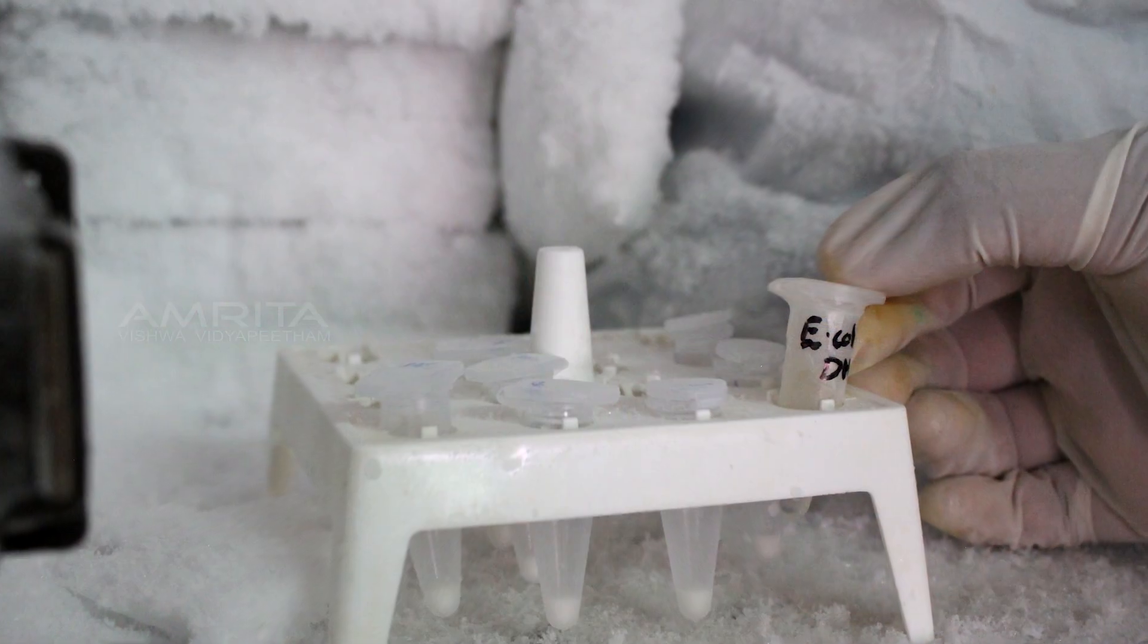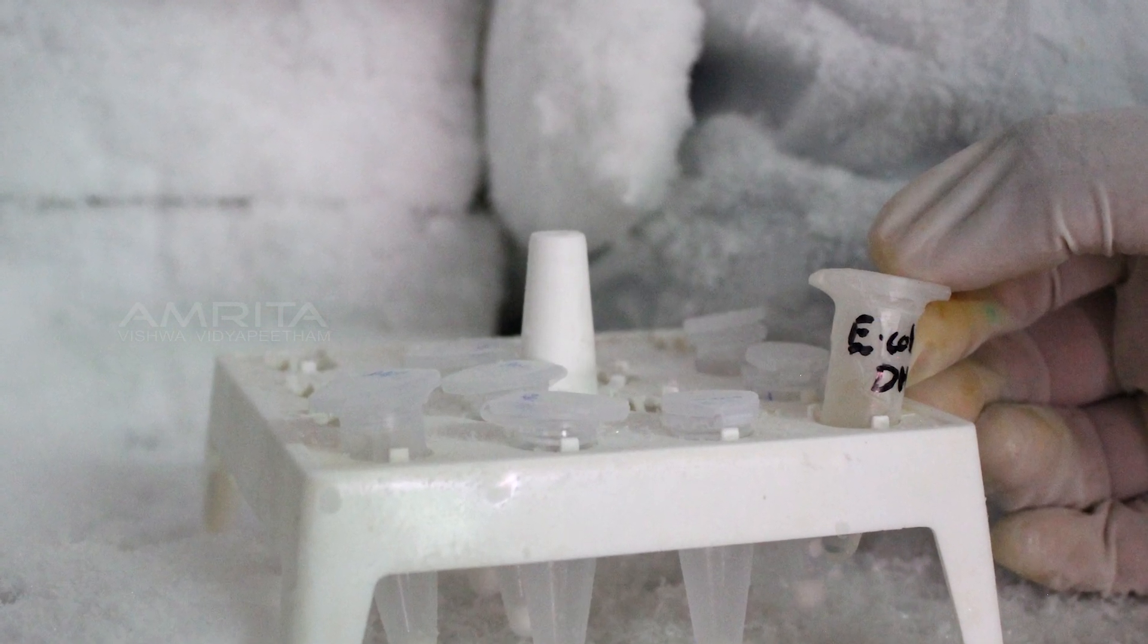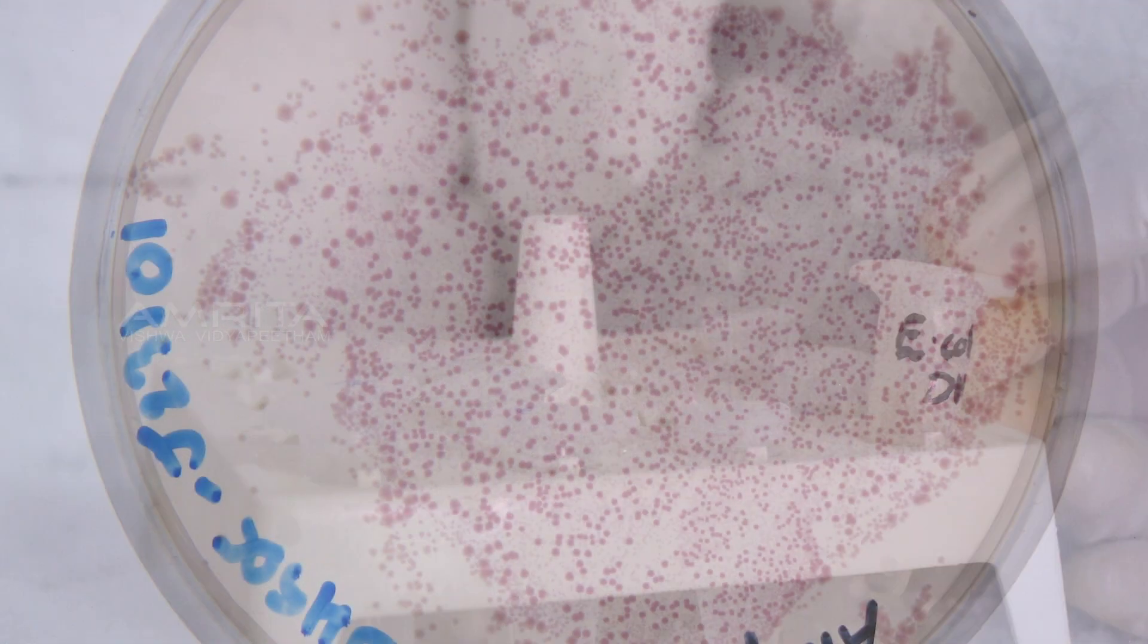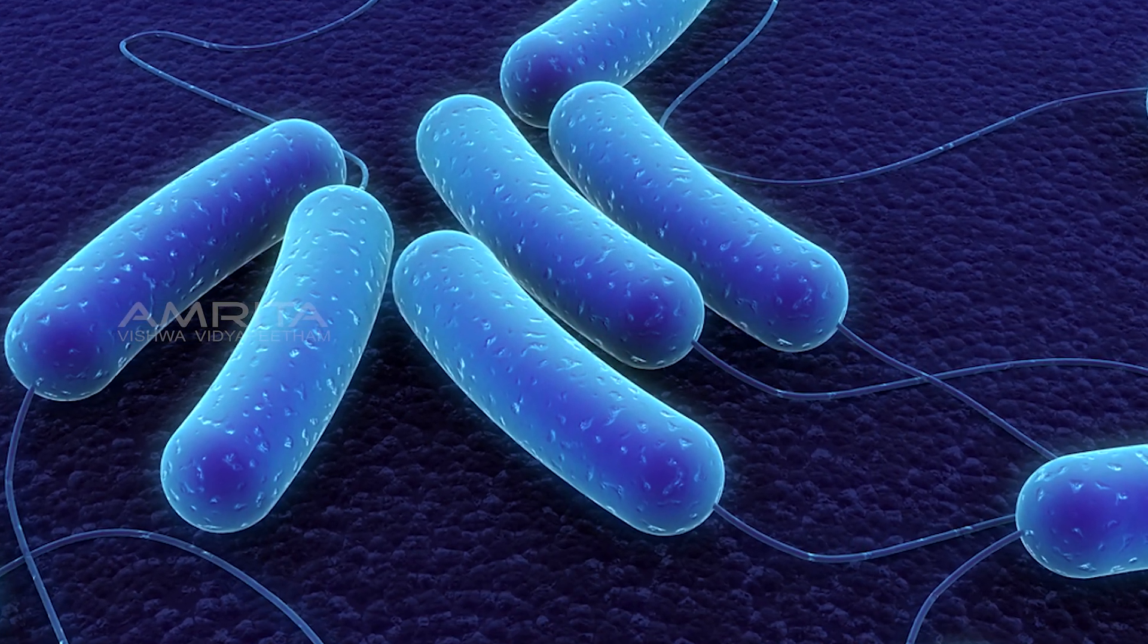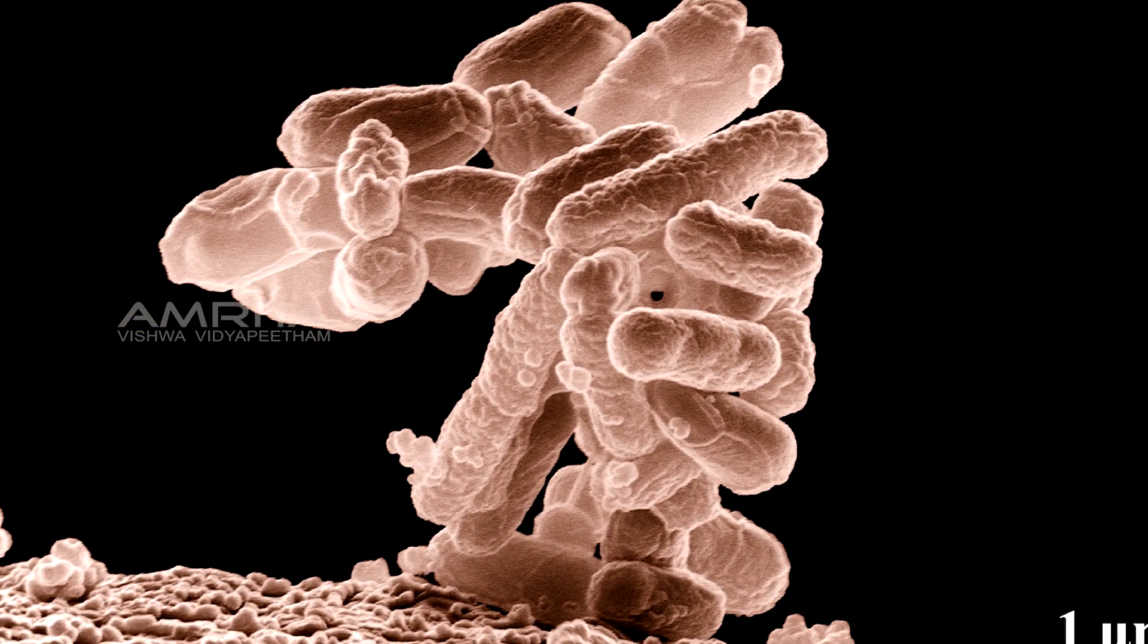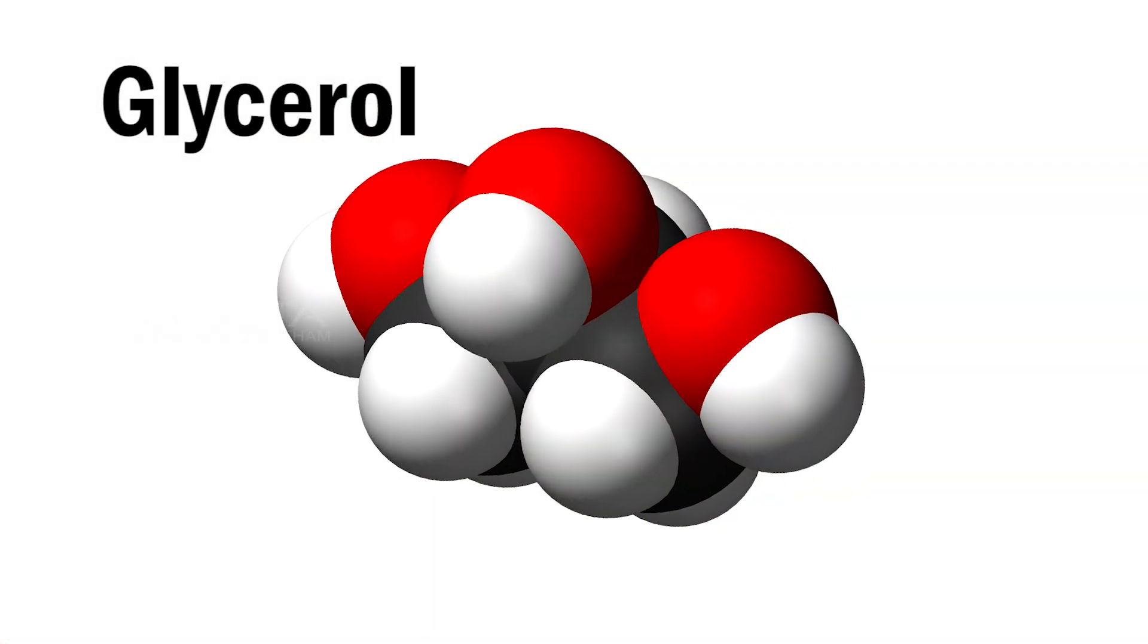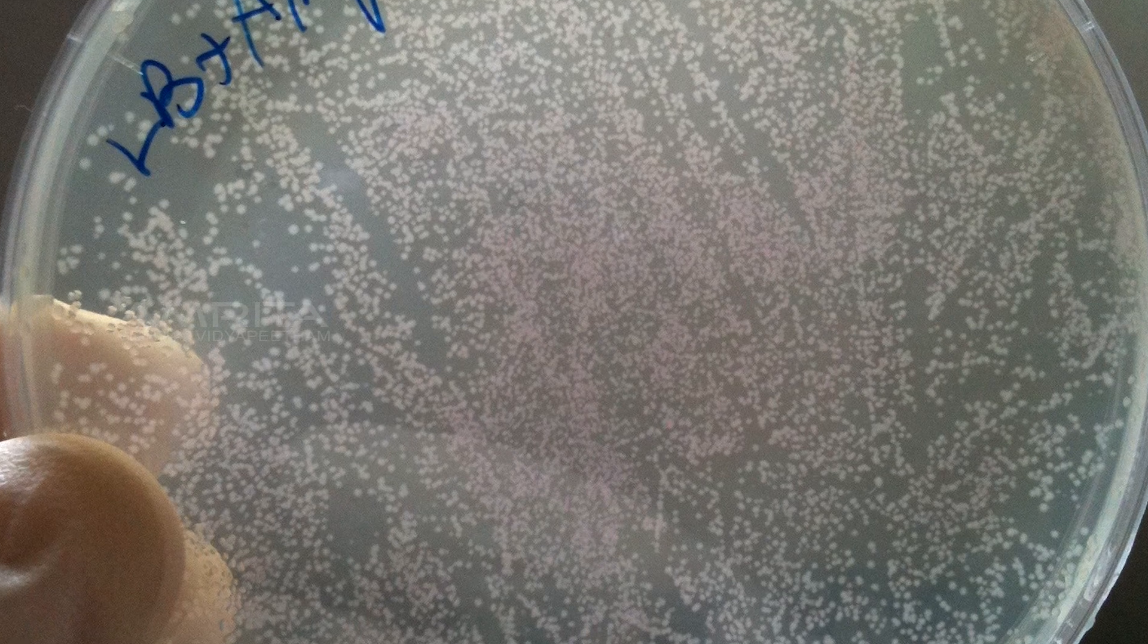Freezing is one of the most efficient methods available for this purpose. DH5-alpha, which is a commonly used E. coli strain for routine cloning applications, is stored as glycerol stock at very low temperatures for long periods of time.